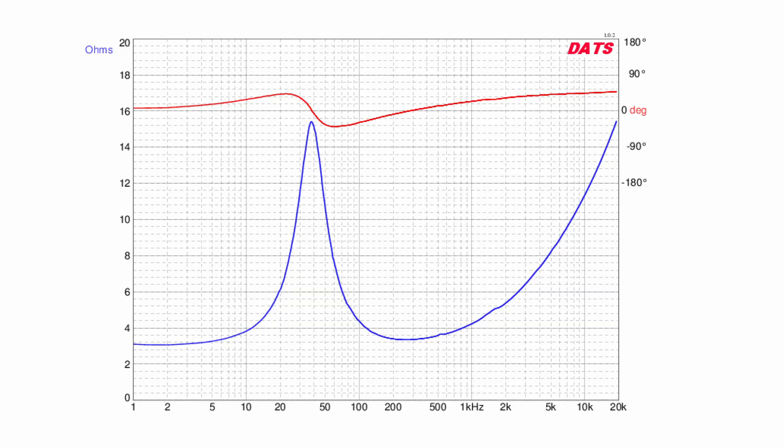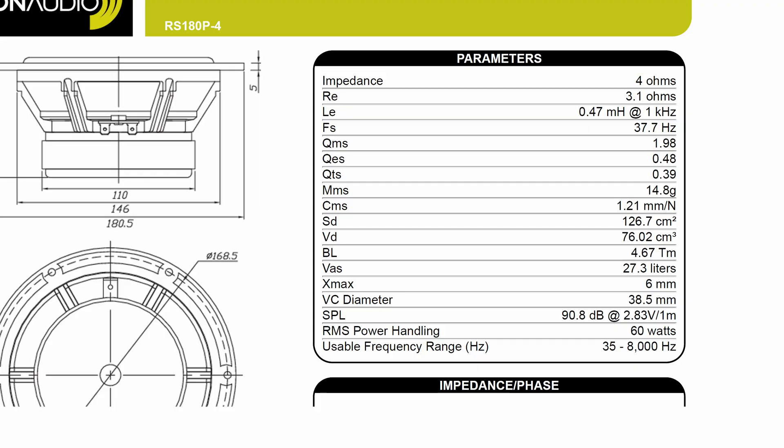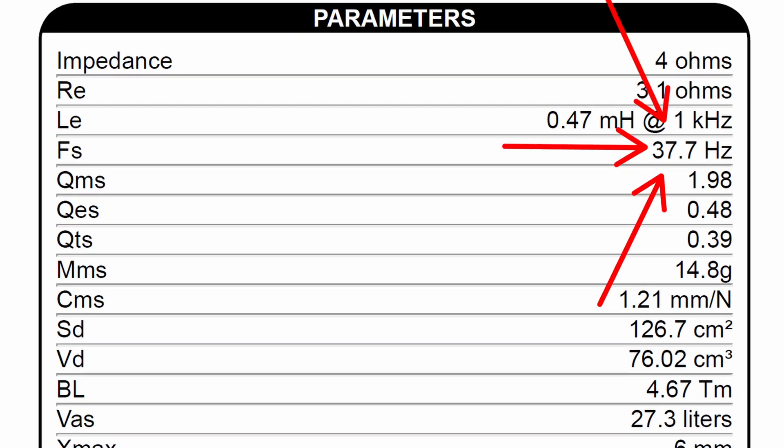First of all, if you see a peak in an impedance chart, that's a resonance. Resonances are usually bad. If we look at this chart, we see a huge peak at around 37 Hz. That's the free air resonance of the speaker — it's naturally occurring and not much you can do about that.